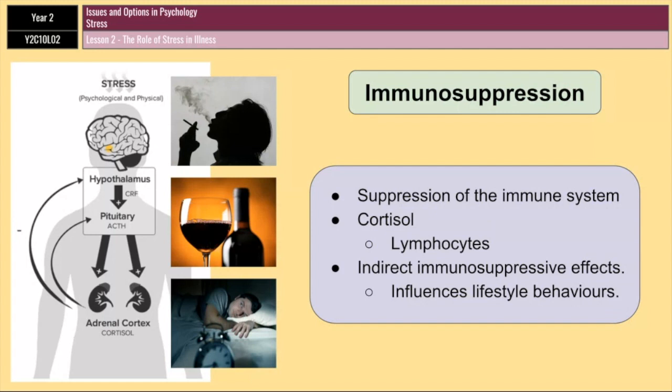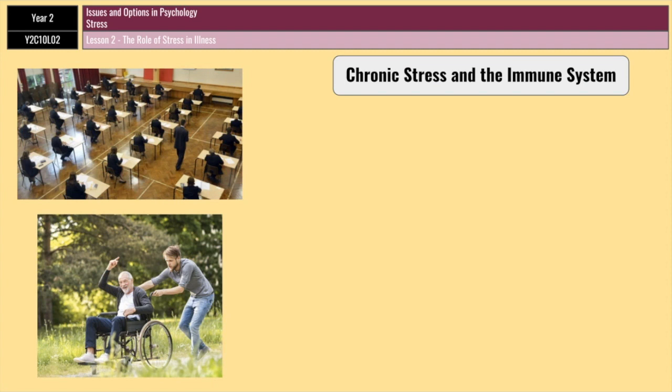We're now going to look at a whole range of studies. This topic is particularly study-heavy because it builds a lot on the previous lesson. You will need to know the majority of these studies, so try to remember them as best you can. We'll start with a couple of studies that look at the effect of chronic stress on the immune system.